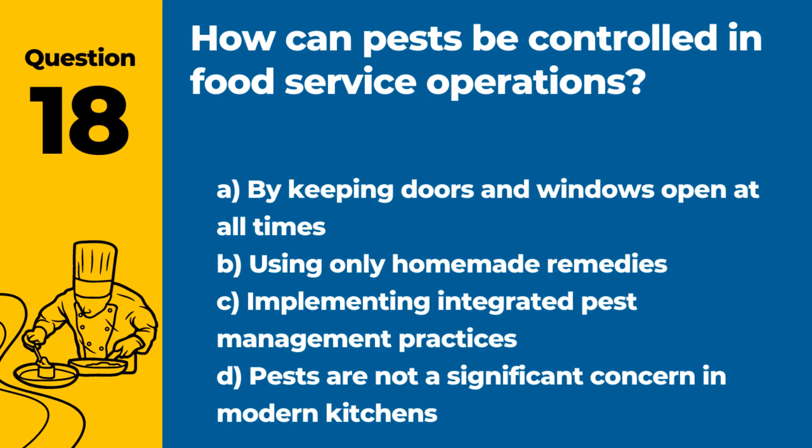Question 18. How can pests be controlled in food service operations? Answer: C. Implementing integrated pest management practices. Effective pest control involves prevention, monitoring, and using control methods when necessary.